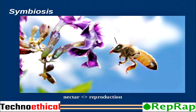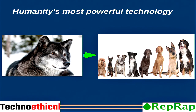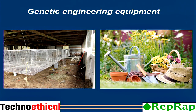Symbiosis is very important for the RepRap project. Like with flowers — bees are attracted by the nectar, and thanks to that the bees help the flower replicate. And like chickens and humans — we raise chickens for the eggs and for the meat. That's another example of symbiosis. Our greatest powerful technology is genetic engineering, and these are two examples of genetic engineering equipment that some of us use every day.